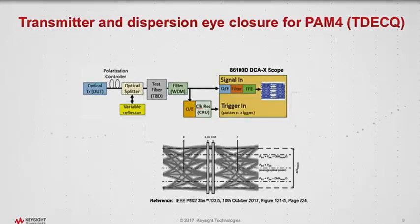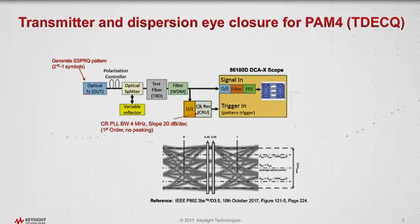This is the block diagram showing the TDEC-Q measurement. On the top left you can see your device — your optical transmitter — and it must generate an SSPRQ pattern: a short stress pattern repetitive quaternary. That's a PAM4 signal that's 2 to the 16 minus 1 symbols long. It's passed through a variable reflector to control the return loss, then through a test fiber. You may need to filter the signal before it goes into the oscilloscope. In addition, you need clock recovery for your optical signal.